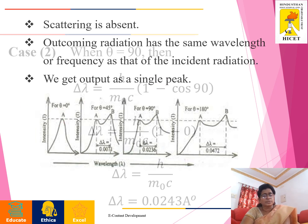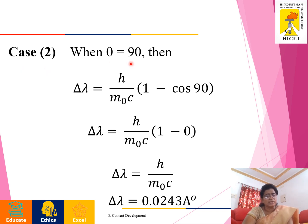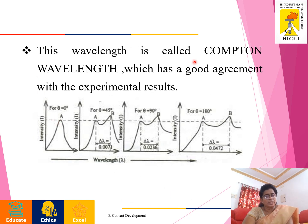Then case 2. When theta equals 90 degrees, change in wavelength, h by m not c times 1 minus cos 90. Cos 90 is 0. Therefore, 1 minus 0 is 1. You will get del lambda equals h by m not c. That is the change in wavelength. Del lambda equals 0.0243 angstrom unit. You know h is Planck's constant, 6.625 times 10 to the power minus 34. m not is a constant, 9.11 times 10 to the power minus 31. c value is the velocity of light. We will get this value. Actually, this wavelength is called the Compton wavelength, which has a good agreement with the experimental results. We will get one more point B.